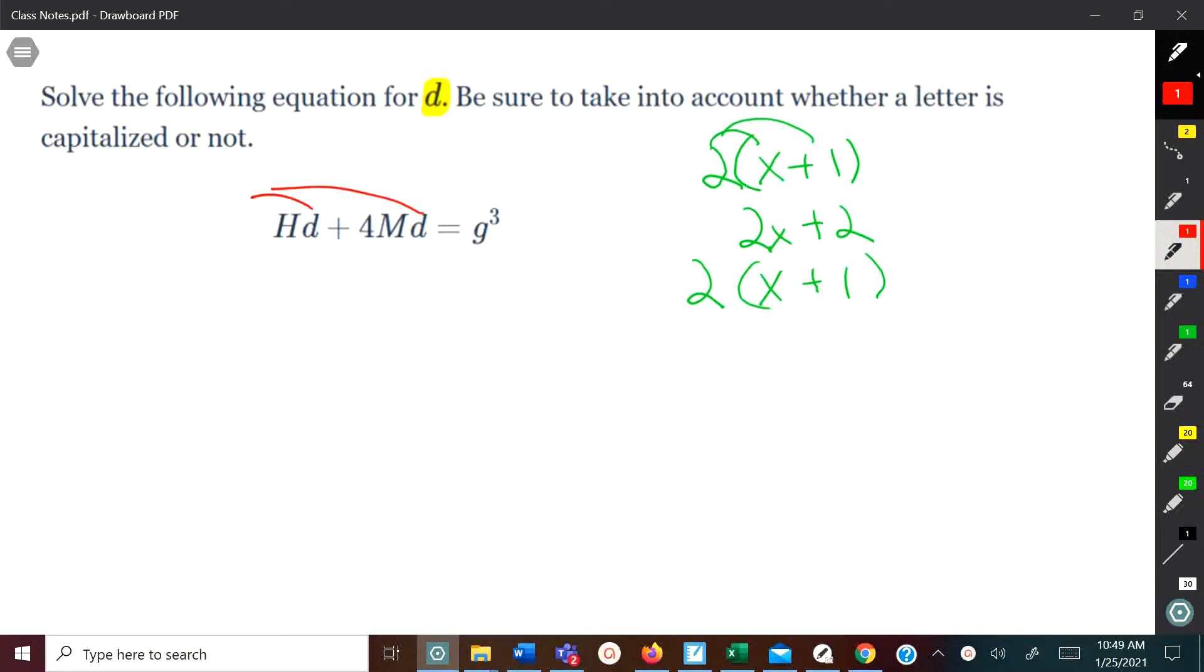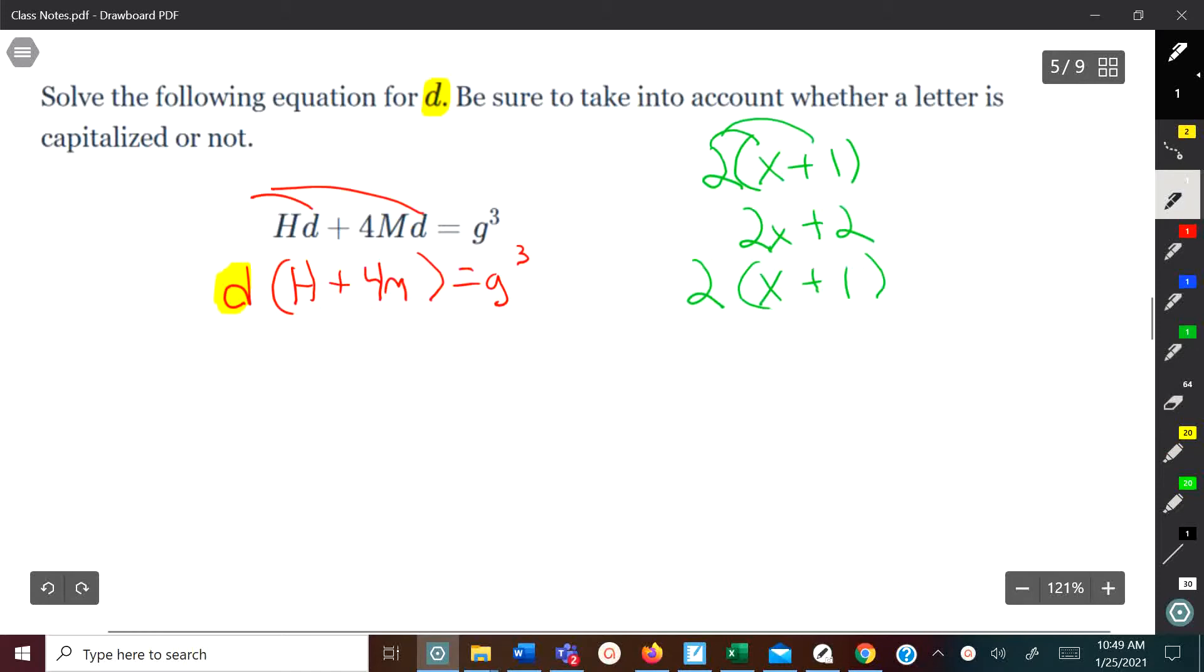Being that we've got D is multiplied times H and D is also multiplied times 4M, what we're going to do is undo that distribution. We're going to pull out the D. So I'm going to put parentheses for everything else and isolate or pull this D out. It's going in reverse of distribution. Since the D is coming out, what's left here is H plus 4M, and all of that is equal to G cubed. Now, the next step is we still want to isolate the D. In order to do that, I've got H plus 4M in parentheses. All of this is multiplied against D. So since it's multiplied, you do the opposite, which is divide. So we're going to divide H plus 4M on both sides.